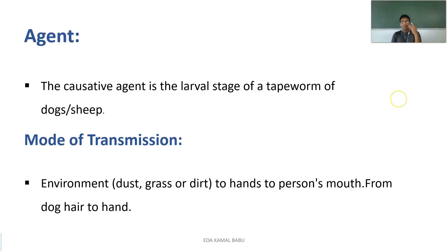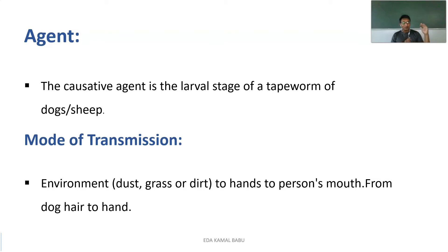Coming to the agent factors, the causative agent is the larval stage of the tapeworm, which comes from dogs or sheep. The mode of transmission is mainly from the environment — whenever a person comes in contact with infected material such as dust, grass, or any kind of dirt.